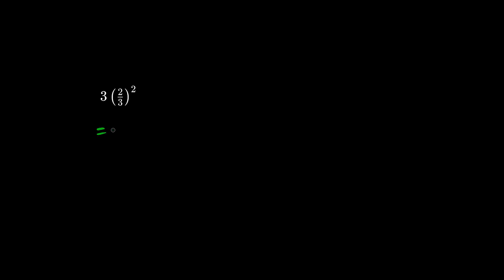According to BEDMAS, we must do the exponents before we multiply. So we have 3 times the exponents: 2 squared is 4 and 3 squared is 9. So the final answer is 12 over 9, which can be simplified by dividing by 3 to be 4 over 3.